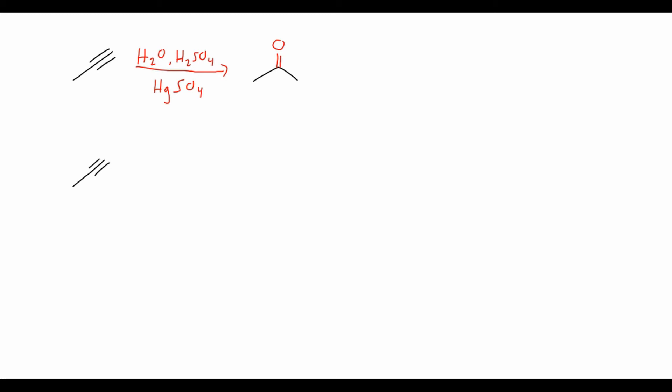We will start with our alkyne precursor, and instead of drawing out the mechanism explicitly with the mercury salt, I'm just going to write H+ as a stand-in for any Lewis acid or Bronsted acid that's going to be in our mechanism. One of the pi bonds in the alkyne will pick up that H+.